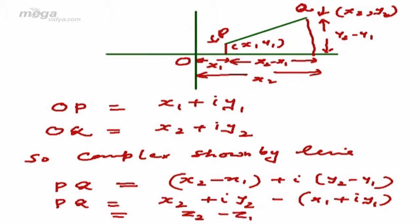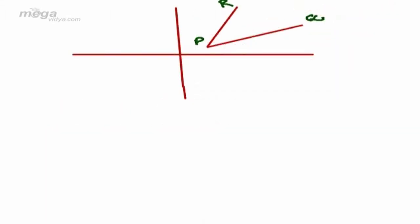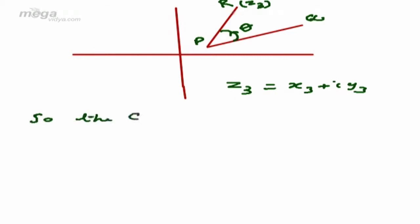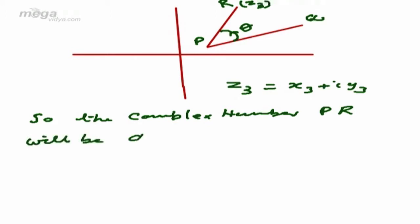So the complex number PQ will be Z2 minus Z1. Now the line PQ is rotated through an angle theta in the anti-clockwise direction to a new position PR. The R point is Z3, that is Z3 = X3 + iY3. So the complex number PR will be denoted by Z3 minus Z1.